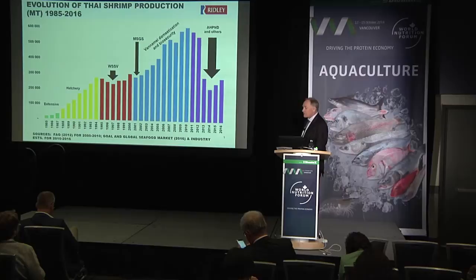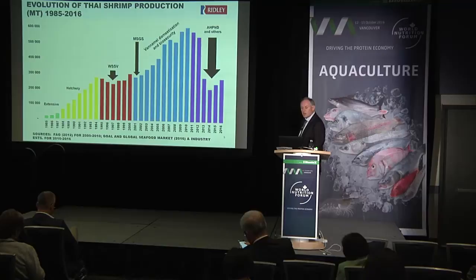Then along came AHPND or EMS, and you can see what kind of effect that's had — it's halved the production or more and continues to affect Thai production right now. This is a very similar situation to what's happened in other countries that EMS has affected, including China, Vietnam, and Malaysia.